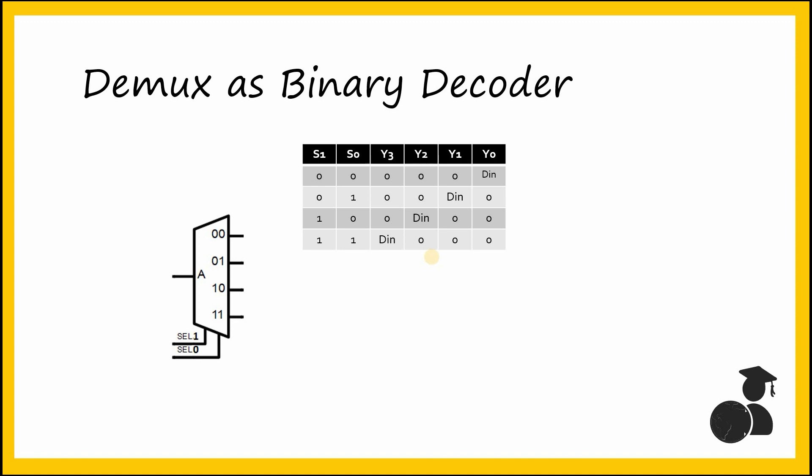Let's start with a 1-to-4 demultiplexer. Here is a 1-to-4 demultiplexer with 1 input, 4 outputs, and 2 select lines. And this is its truth table. As you can see, when the select lines are 00, the data input is sent to Y0. When it is 01, the data input Din is sent to Y1.